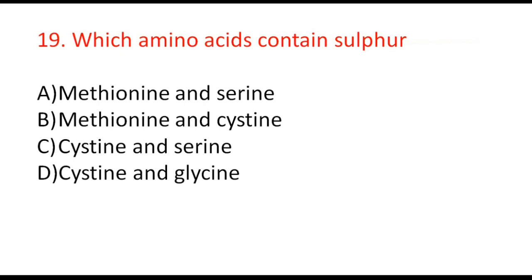Next question: which amino acids contain sulfur — methionine and serine, methionine and cysteine, cysteine and serine, or cysteine and glycine? The correct answer is B, methionine and cysteine.